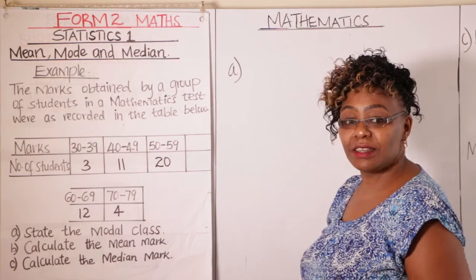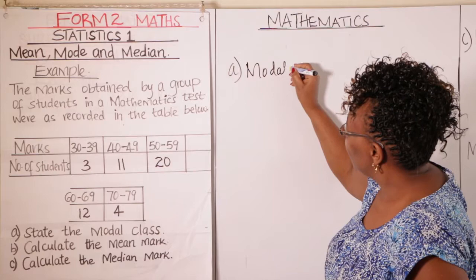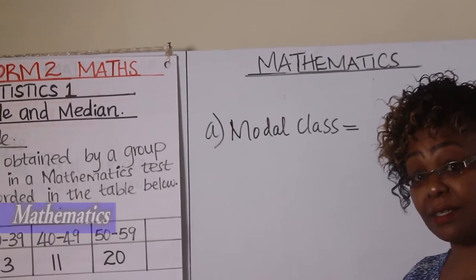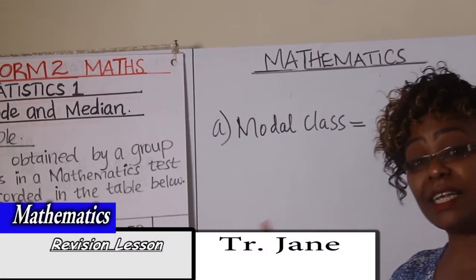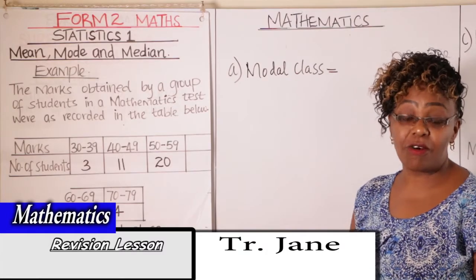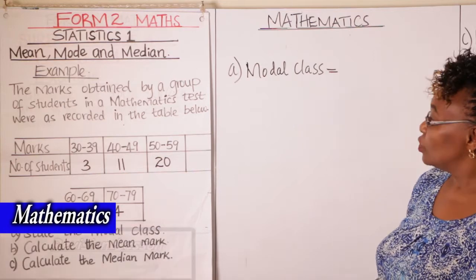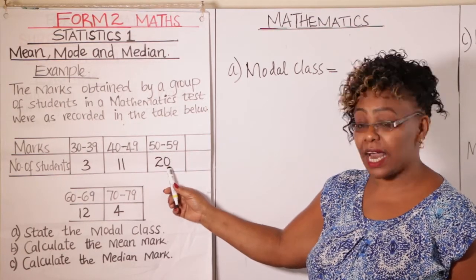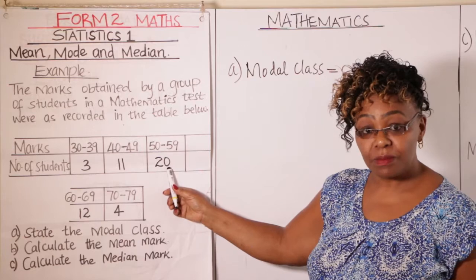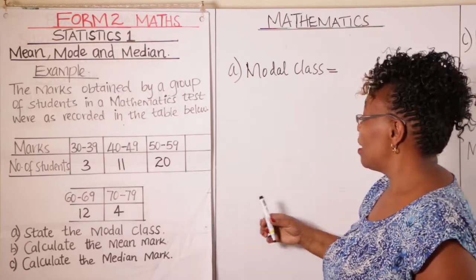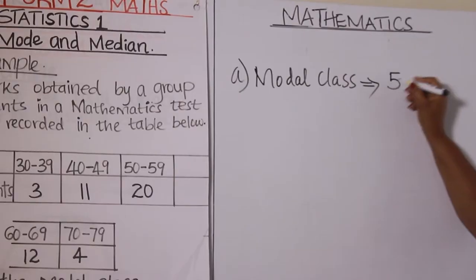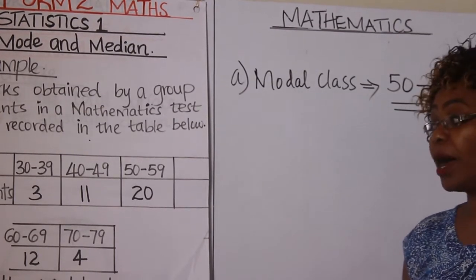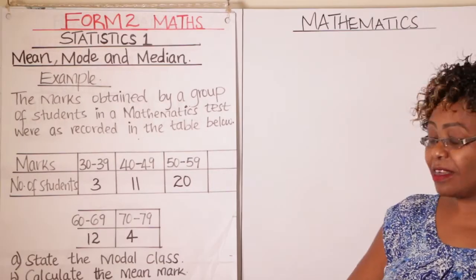Part (a): state the modal class. The modal class refers to the class which has the highest frequency — the class where you have the majority of the students. Looking at our table, the class 50 to 59 has a frequency of 20, which is the highest. Therefore, our modal class is 50 to 59.